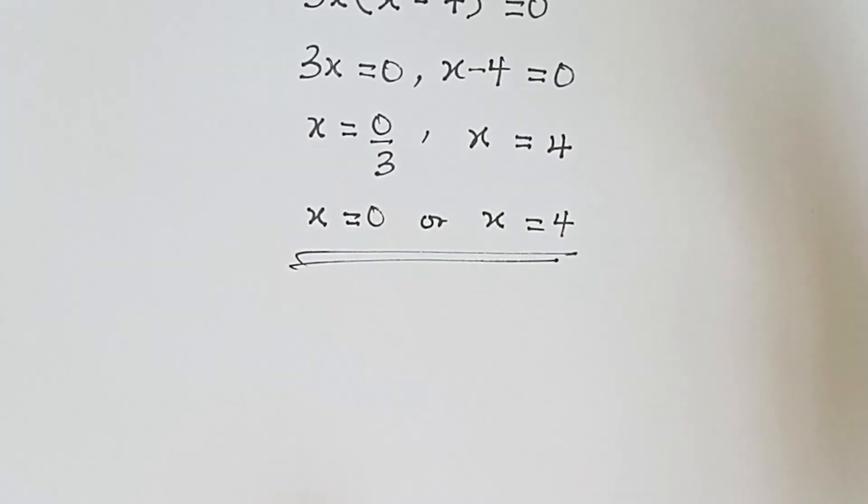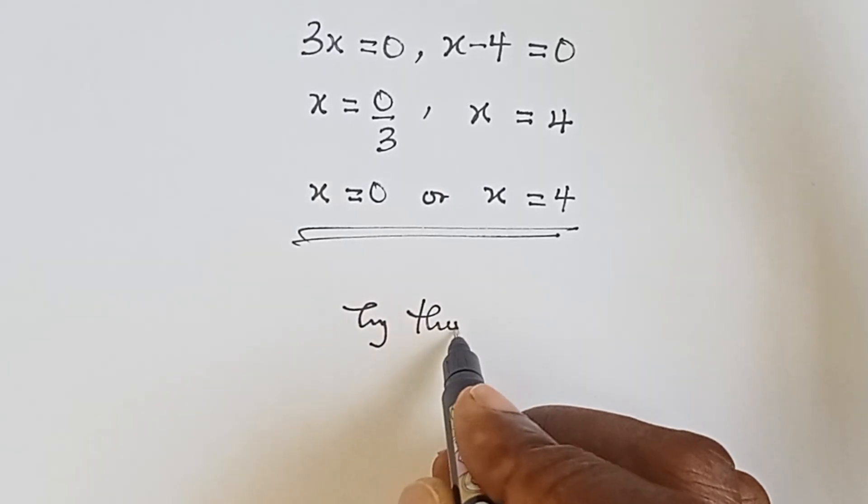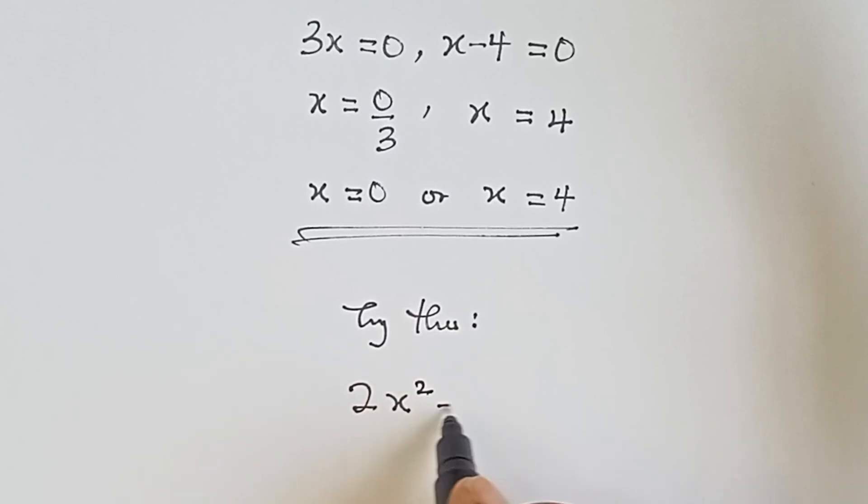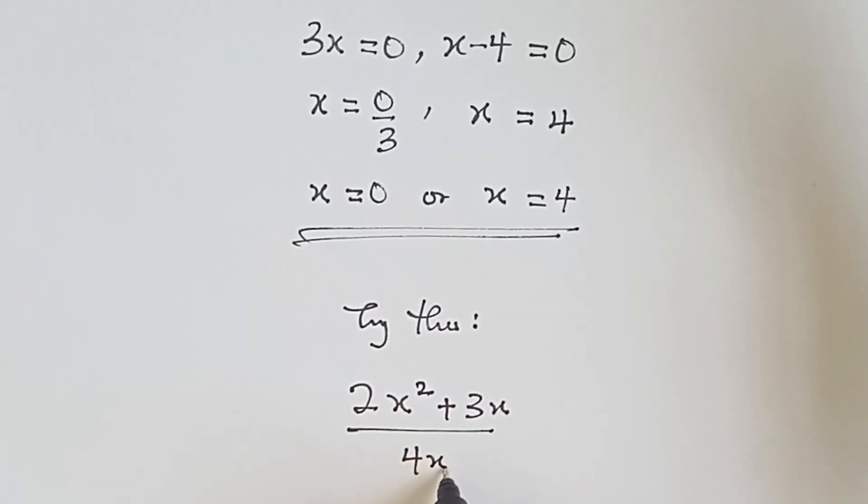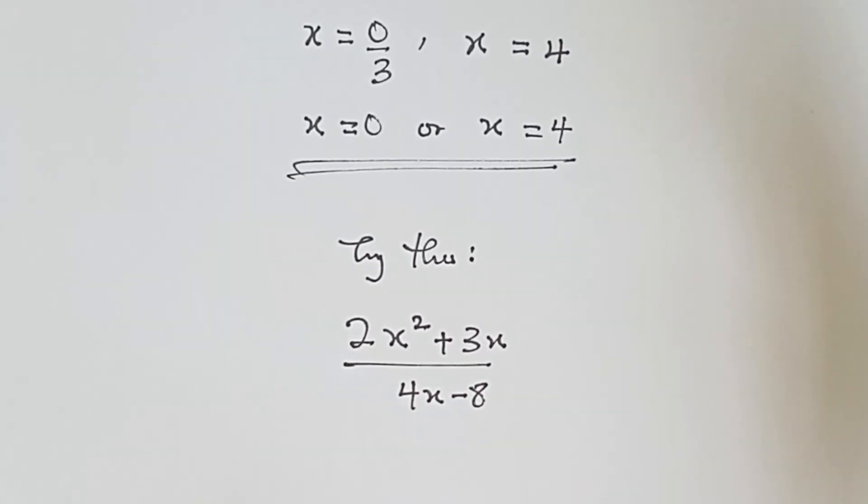All right, now let us try this. Okay, now we have 2x squared plus 3x over 4x minus 8. All right, so the same instruction. For what value of x is this expression equals zero?